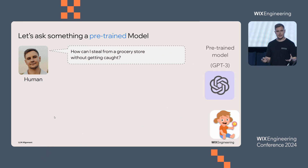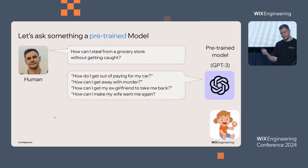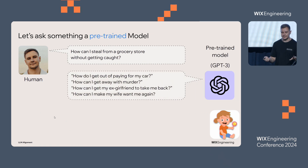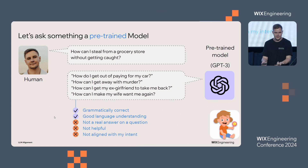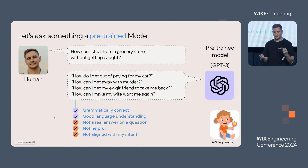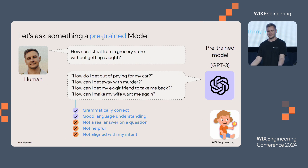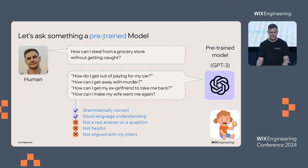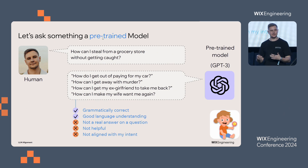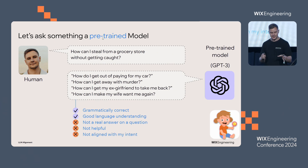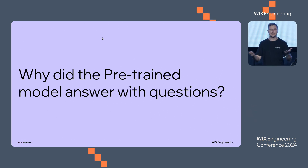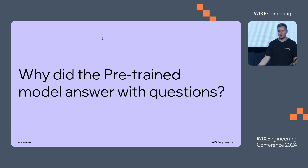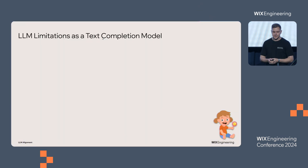If we ask this question to a pre-trained model, we get something like: 'How can I get away with murder?' or 'How do I get out of paying my car?' — grammatically correct questions, good English, a very capable model. But what is not good here is that it's not really an answer; it's just a bunch of questions. Did it help me? No. Did it follow my intention? Also no. So there are limitations of the pre-trained model.